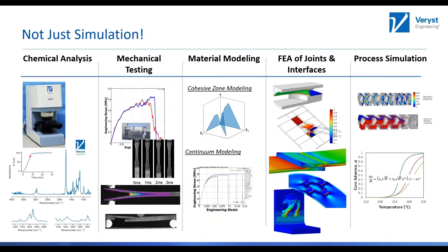One more slide about Verist: we couple simulation with testing very well. For example, for FAA analysis of joints and interfaces, we do the chemical analysis — what you see are FTIR images on the left showing the chemical composition, done in-house. Then we do the testing, whether of the materials themselves to get stress-strain curves, or of the adhesive to get the adhesive strength. We get that data at different rates and temperatures to calibrate the material model.